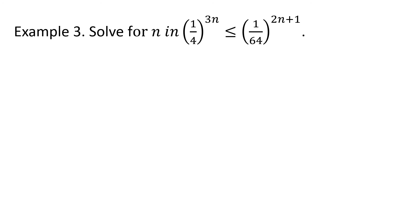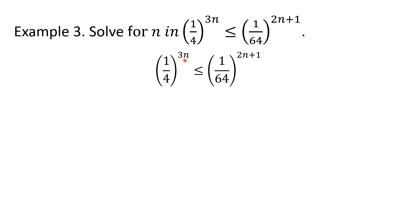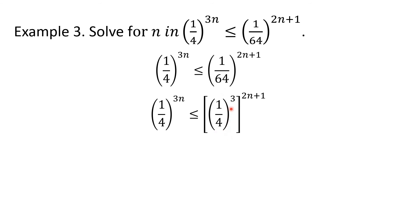Example 3. Solve for n in 1 fourth raised to the 3n power is less than or equal to 1 over 64 to the 2n plus 1 power. This is the given inequality. We are going to solve for the unknown variable exponent n. Again, we must express both sides as terms with the same base. 1 over 64 can be expressed in terms of 1 fourth, since 64 is 4 cubed and 1 is 1 cubed. So the right-hand side becomes 1 fourth to the 3rd power, and both sides now have the same base, 1 fourth.